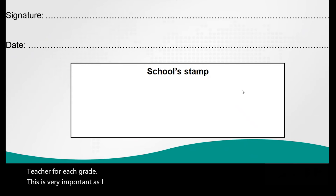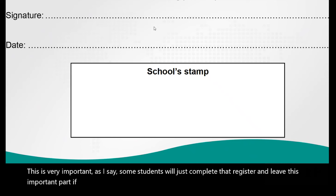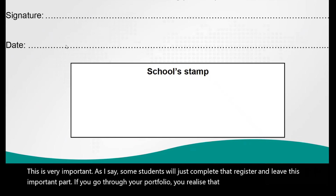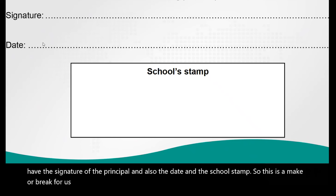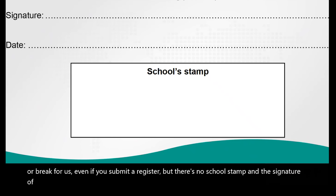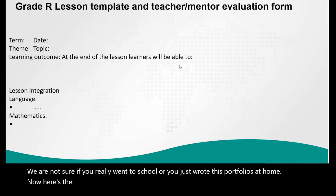This is very important: some students complete the register but leave out this important part. If you go through your portfolio you'll realize there's nowhere for the signature of the principal, the date, and the school stamp. This is a make-or-break for us. Even if you submit a register but there's no school stamp and no signature of the principal or mentor, we doubt whether you really went to school or just compiled the portfolio at home.